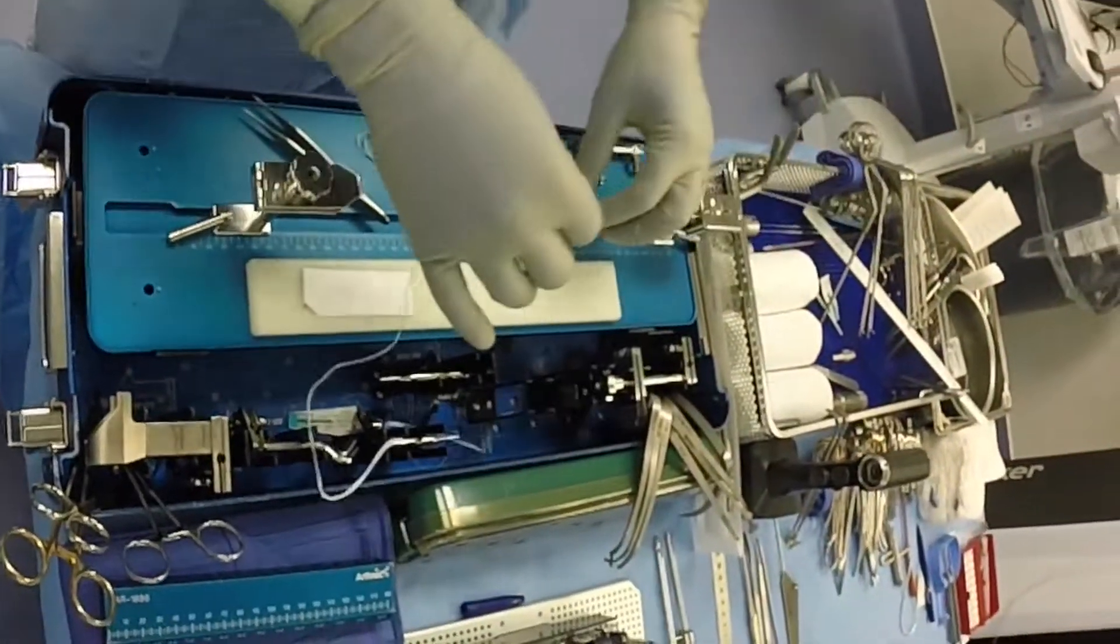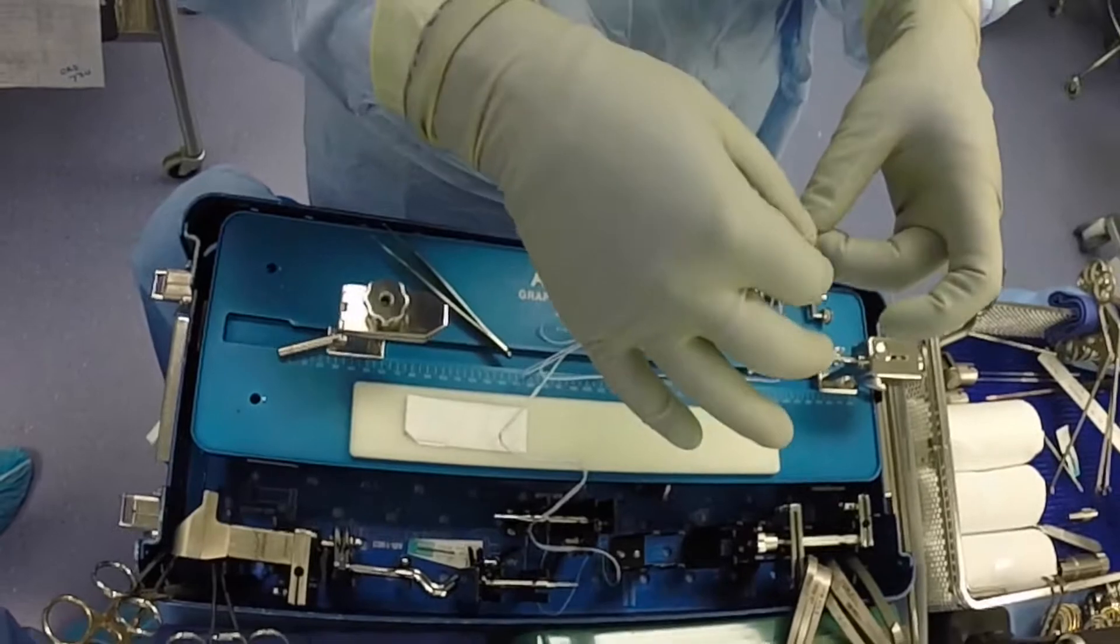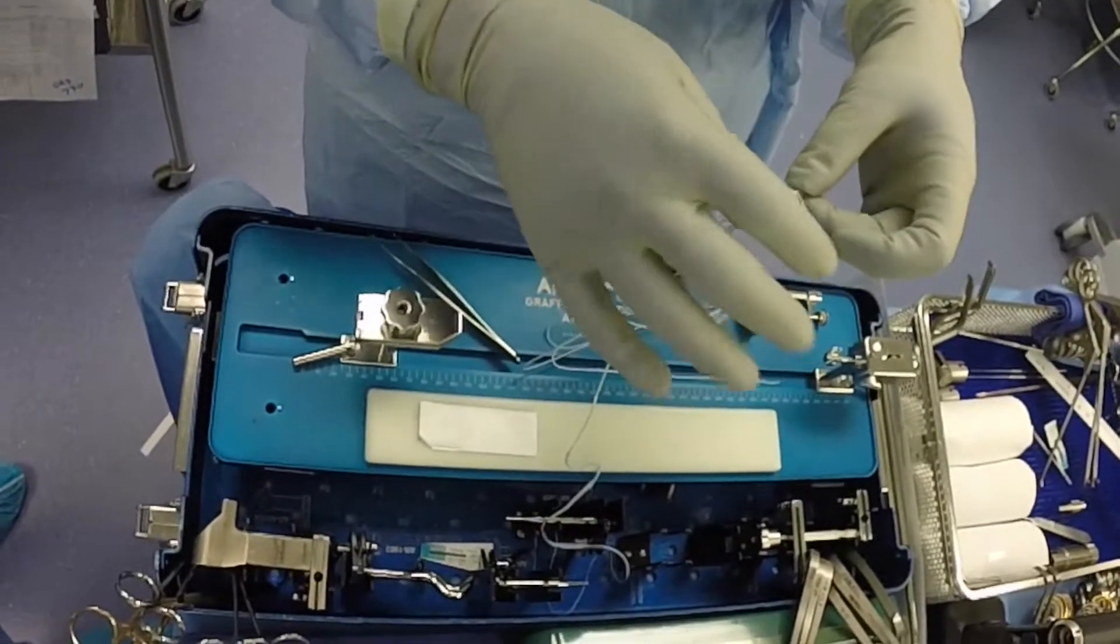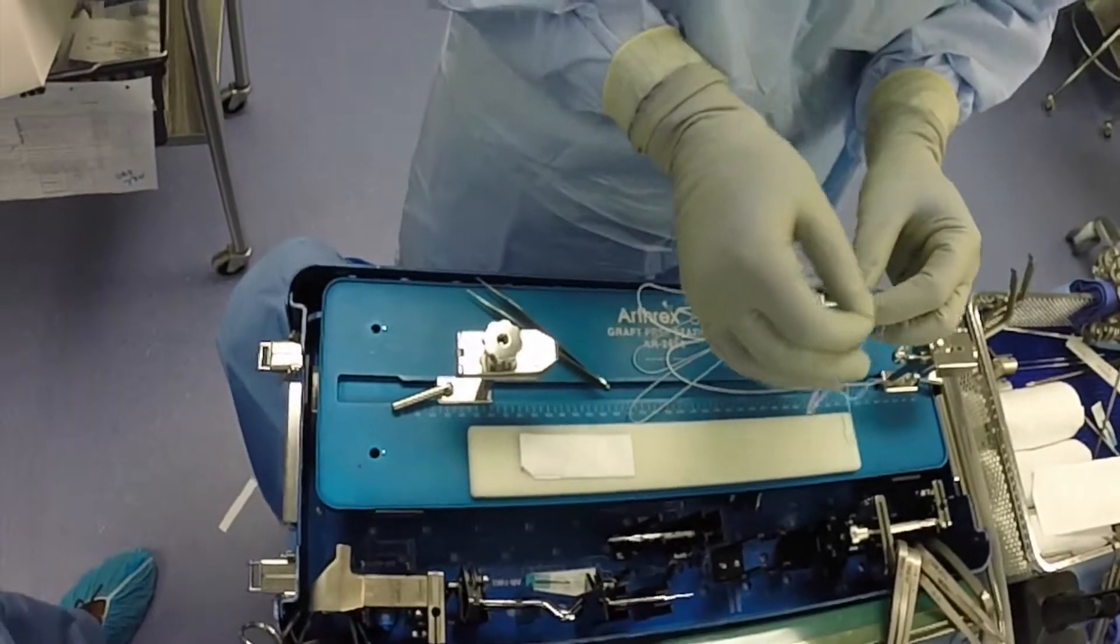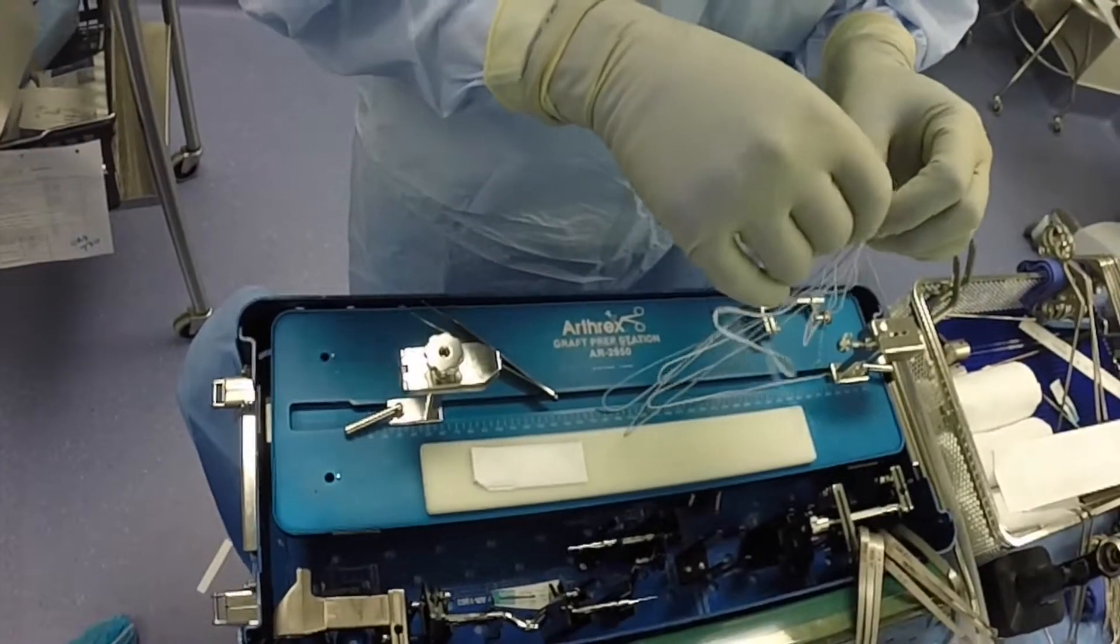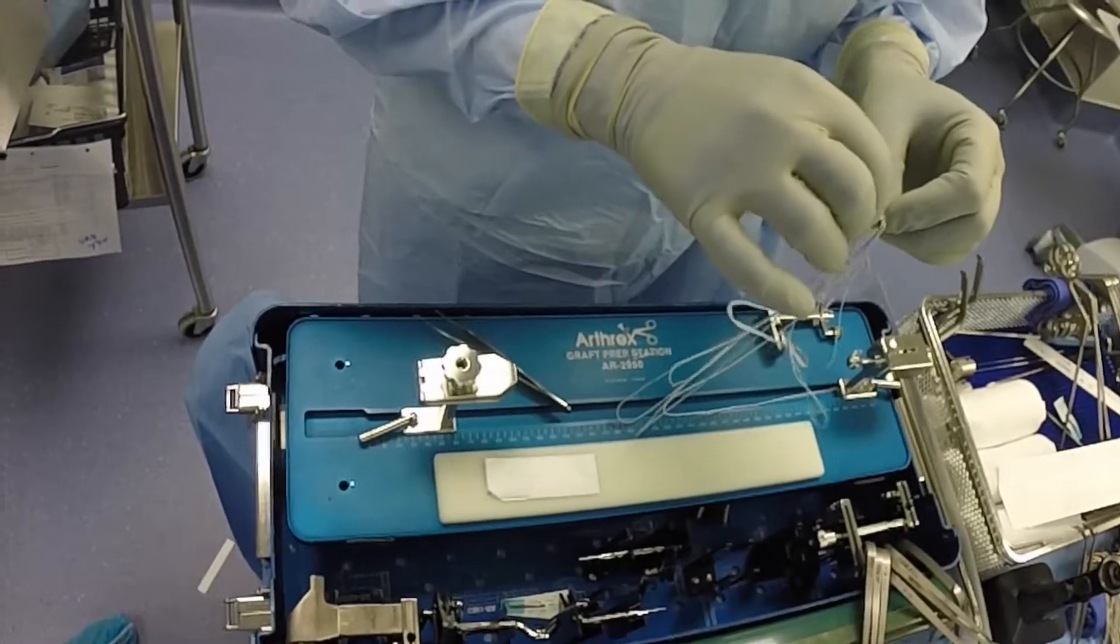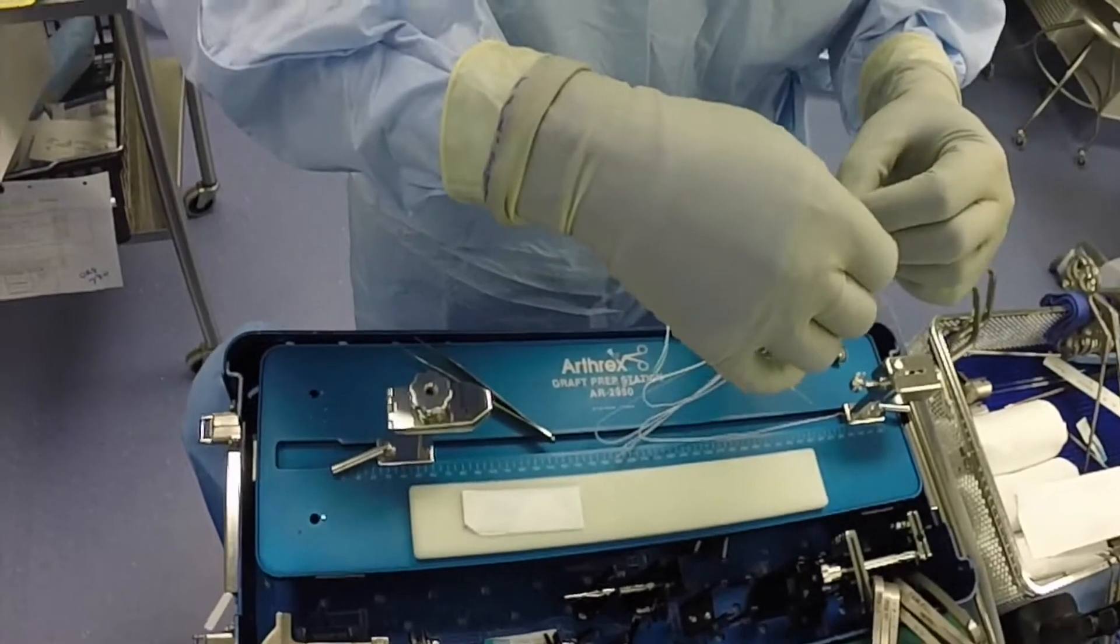In this case, a collagen-coated tape is then passed through the button on both sides such that the tails exit the same side as the loop portion of the suspensory fixation device.